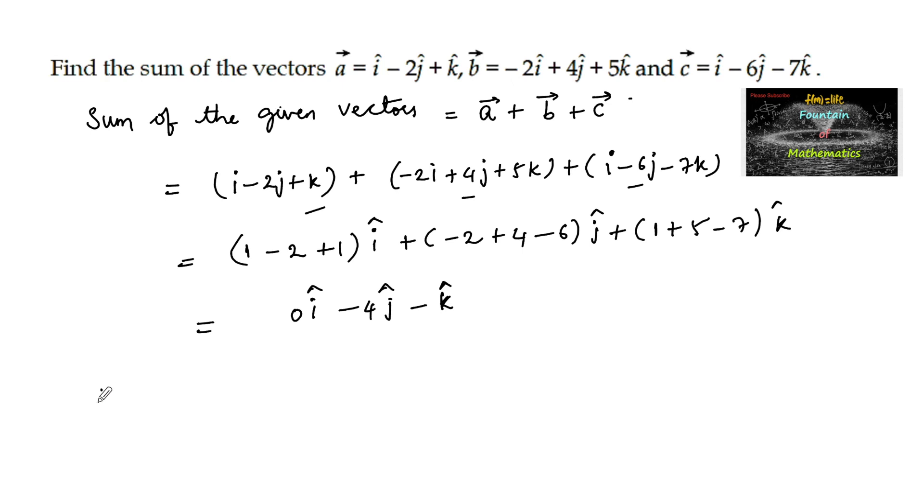Therefore we can write the sum of the vectors which is equal to minus 4j cap minus k cap.